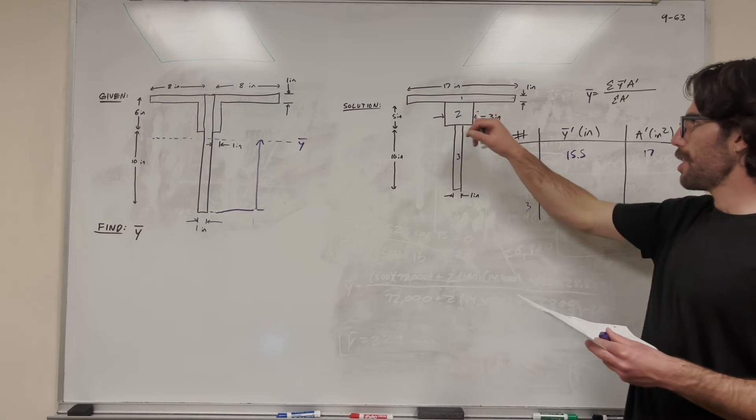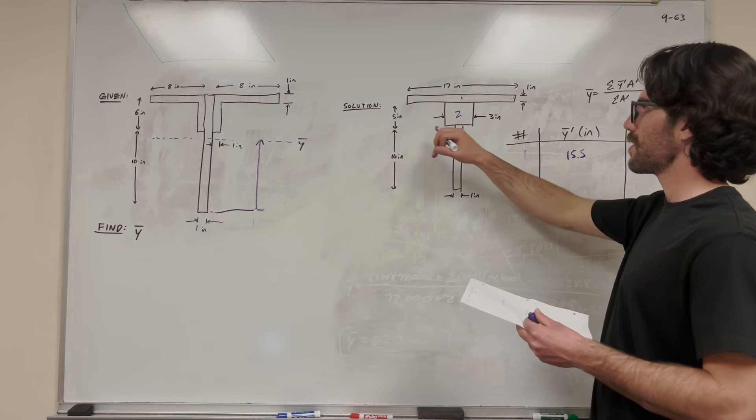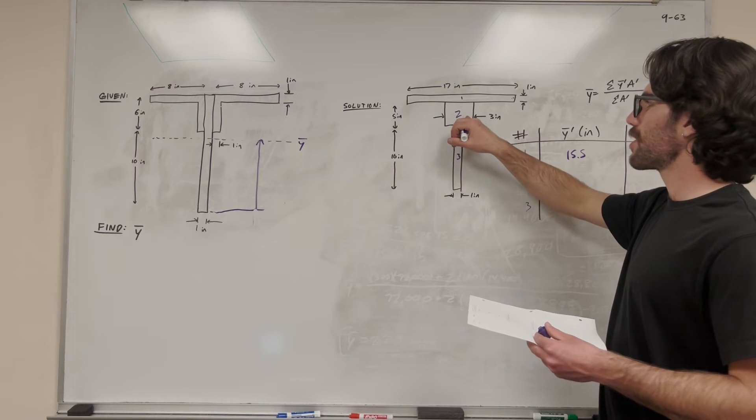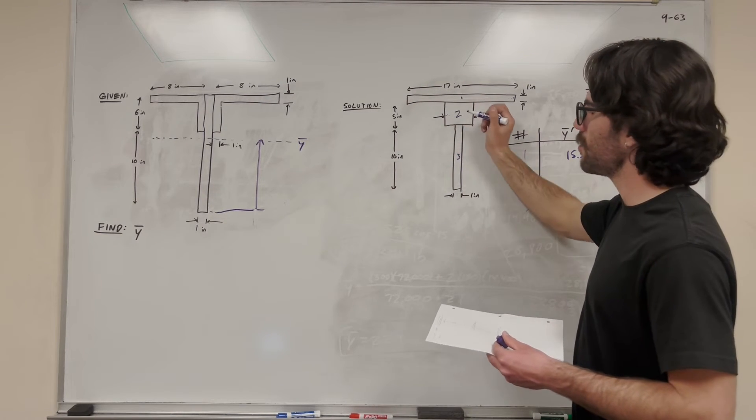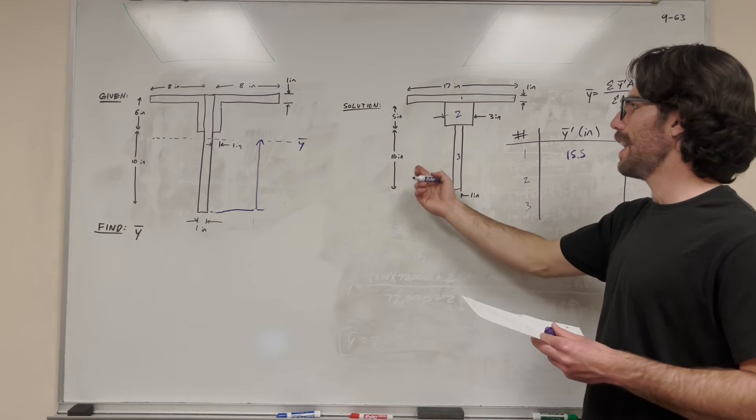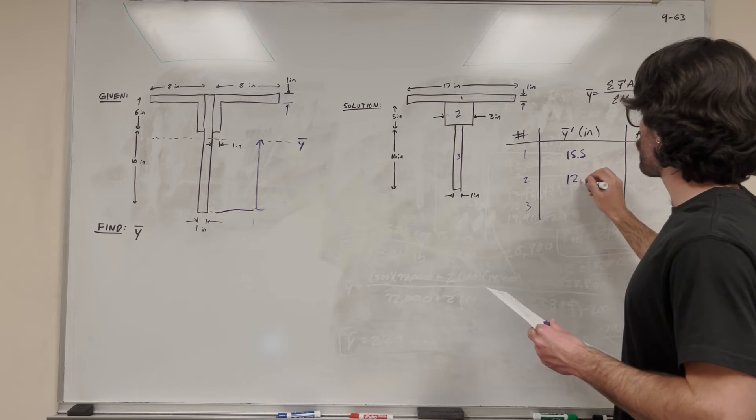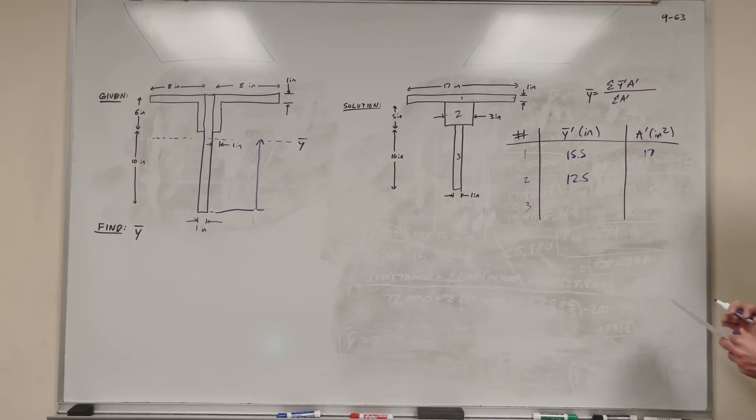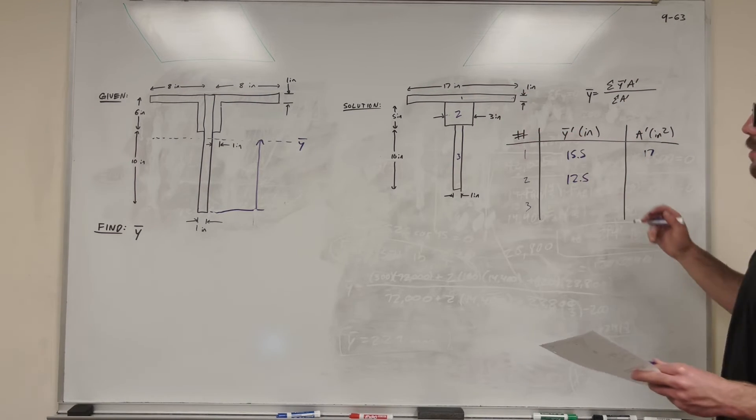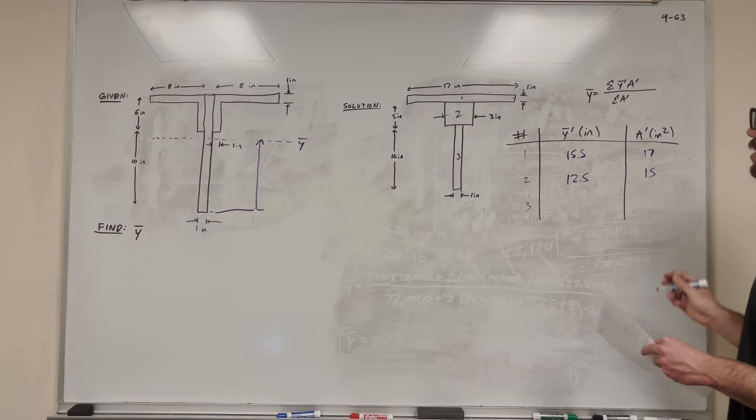Cool, so the second shape, let's see where the center of mass is. So it's 5 inches tall. So if it's 5 inches tall, its center of mass is going to be 2.5 inches from the bottom of it. So it's going to be 10 inches plus 2.5 inches, which is 12.5 inches. The area is going to be width times height, which is 3 times 5 to give us 15 inches.